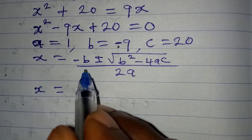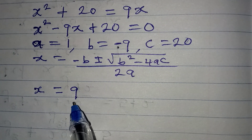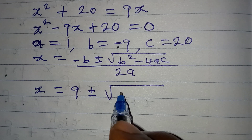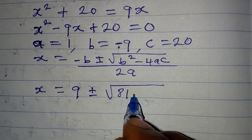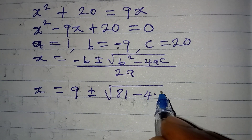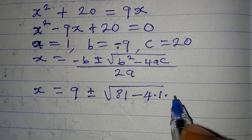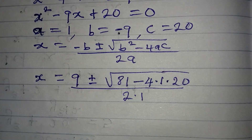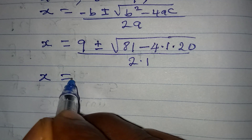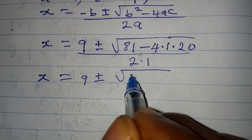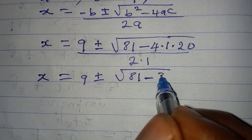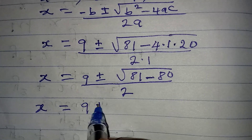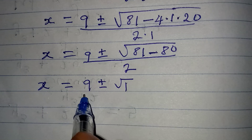x equals minus b, which becomes 9 (since negative of negative 9 gives us positive 9), plus or minus the square root of (-9)² minus 4 × 1 × 20, all over 2 × 1. That gives us 9 ± √(81 - 80), which is 9 ± √1, all over 2.